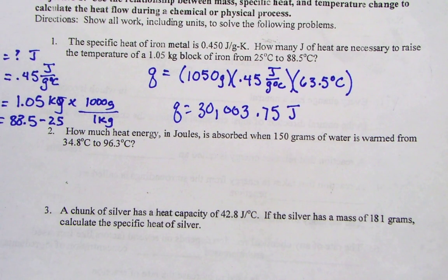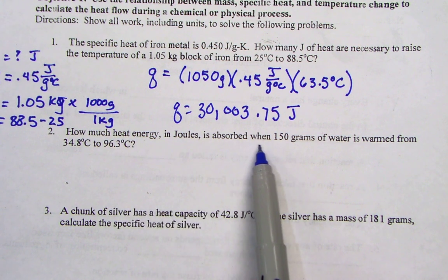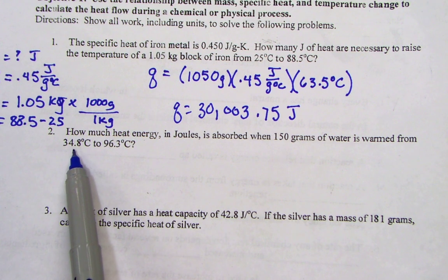Our second problem from our homework: how much heat energy in joules is absorbed when 150 grams of water is warmed from 34.8 to 96.3 degrees Celsius.